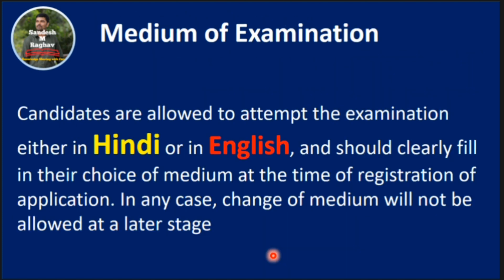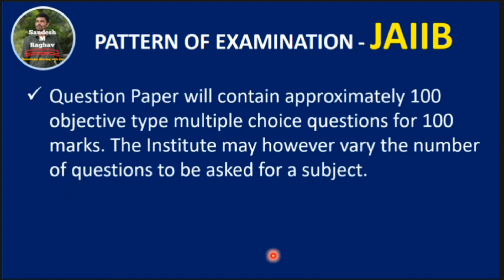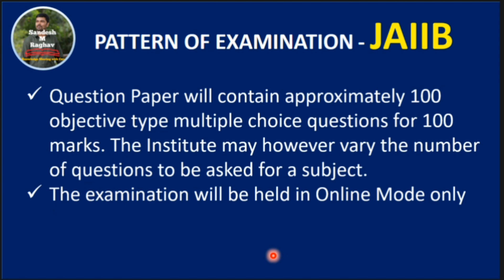The medium of examination is Hindi or English. The examination is conducted online. This examination is conducted every half-yearly, so twice a year, both JAIIB and CAIIB examinations are held. The question paper will contain approximately 100 objective-type MCQ questions, though the institute may change the number. The examination is held in online mode only, but you need to go to the examination centers.